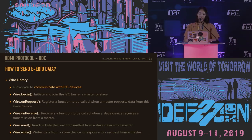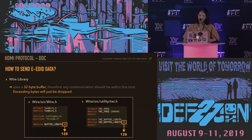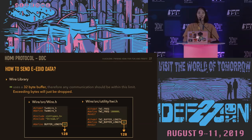We can transfer actual data through the Wire library supported by Arduino for communication with I2C devices. The main functions for data transfer are beginTransmission, requestFrom, receive, read, and write. Note that it uses a 32-byte buffer — therefore any communication should be within this limit. Exceeding bytes will simply be dropped.